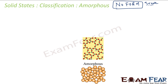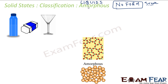The structure of amorphous solids is similar to liquids. They are called solids, but their structure is similar to liquids. Examples include glass, rubber, and plastic. These are good examples of amorphous solids because they soften over a range of temperature.